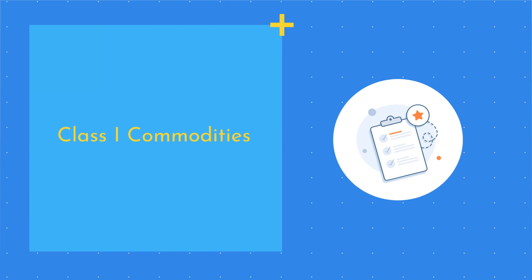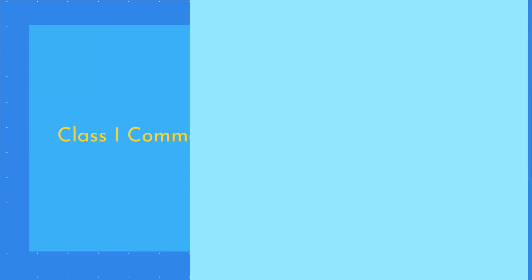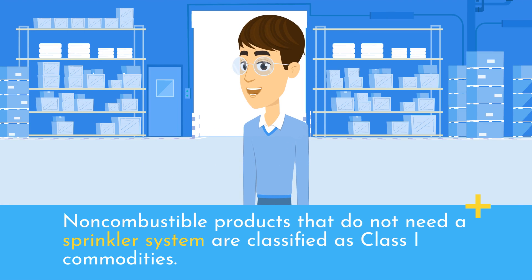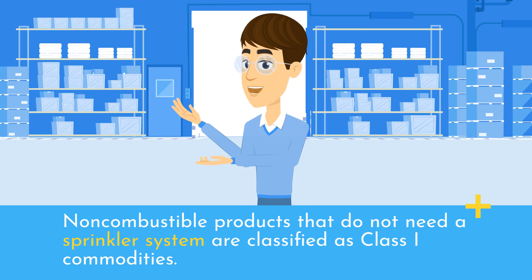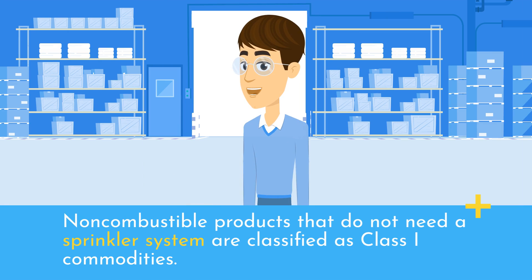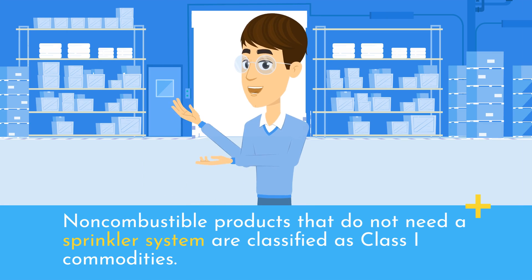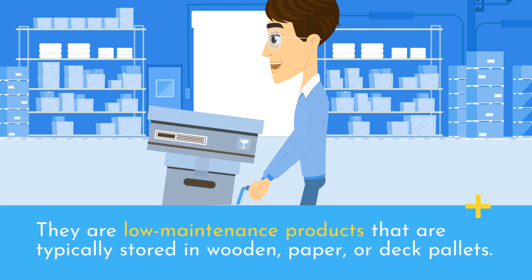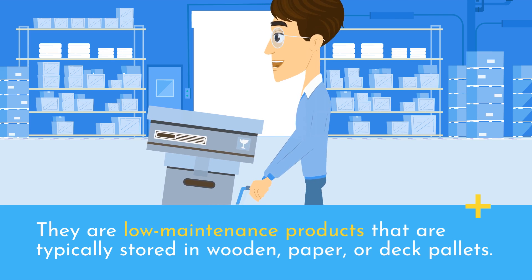Class I Commodities: Non-combustible products that do not need a sprinkler system are classified as Class I Commodities. They are low-maintenance products that are typically stored in wooden, paper, or deck pallets.